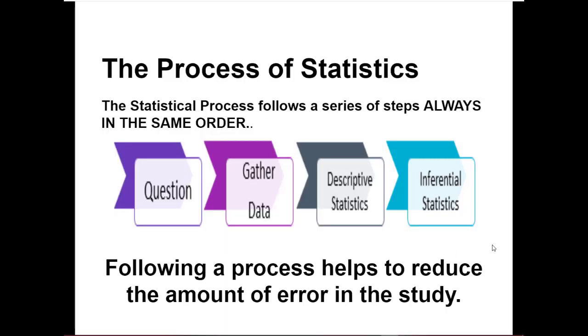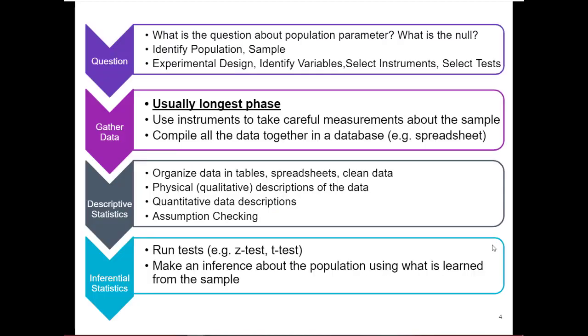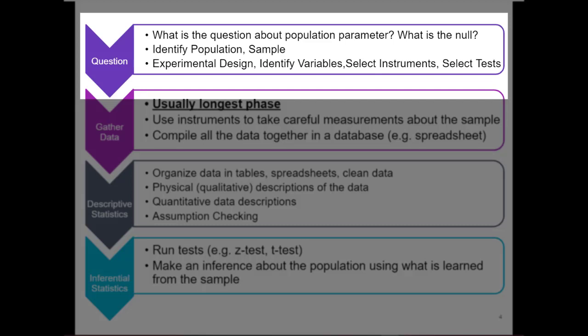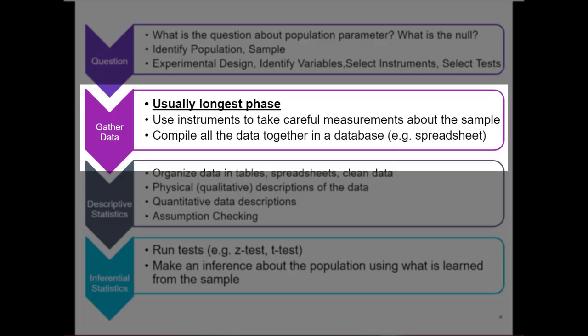By following this process we help to reduce the amount of error in the study. The first phase is the question phase. During this phase you're starting with a question about the population parameter — that's really important. You're asking a question about the population parameter, and depending on the analysis you're doing, you want to know what exists at the moment. During this time you identify the population and the sample, you start working on your experimental design, you identify variables, you select instruments, and you select which tests you are going to run.